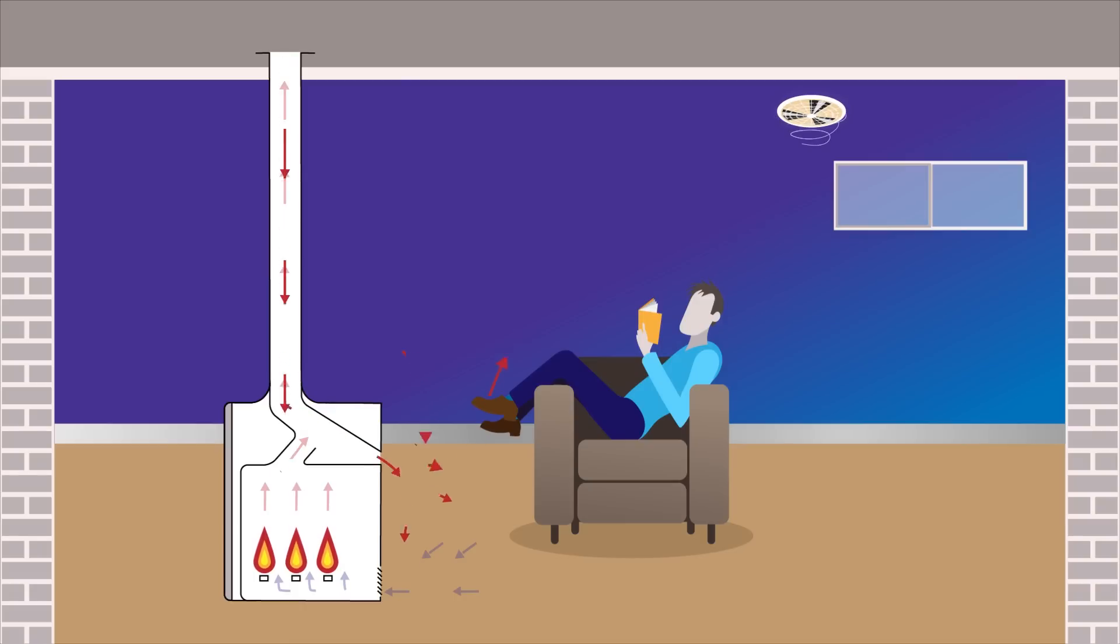In an open flue heater, the flue can operate as an opening to relieve the negative pressure. To prevent this from happening, install ventilation in the room to equalise the air pressure. This will enable the appliance to operate safely.